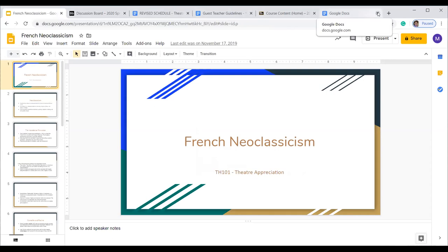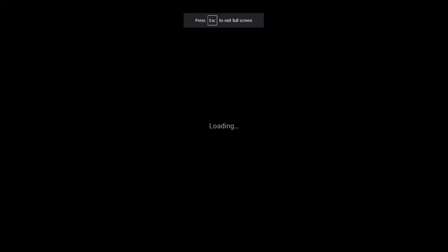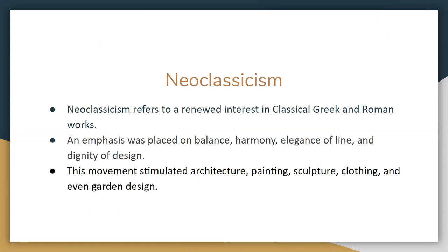The Renaissance basically arrives late in France — late 16th century, early 17th century. The word neoclassicism merely refers to a renewed interest in classical Greek and Roman works. An emphasis was placed on balance, harmony, elegance of line, and dignity of design. This movement stimulated architecture, painting, sculpture, clothing, and even garden design.